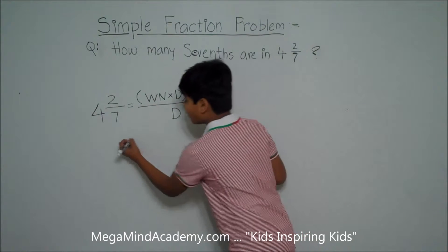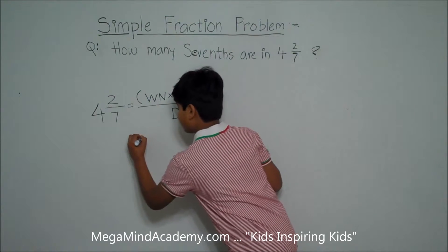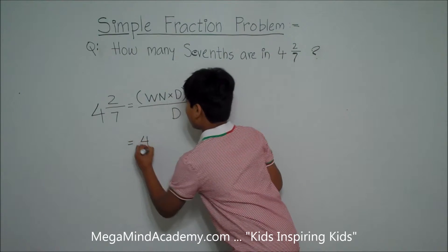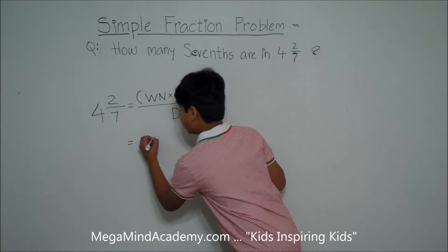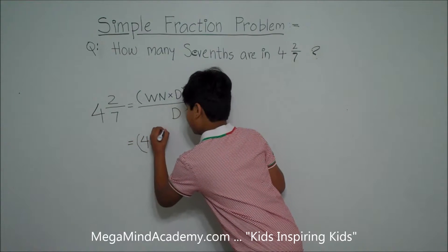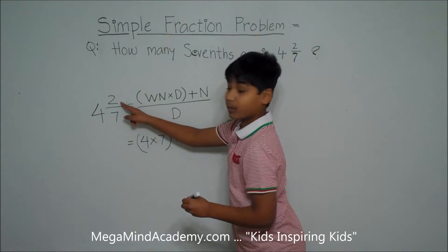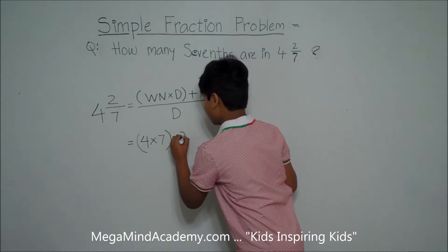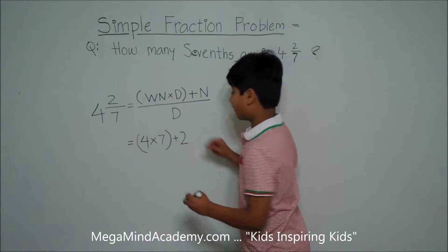So that means that the whole number is 4. We multiply it with the denominator, which is 7. Then we add it with the numerator, which is 2. Then we divide it by the denominator, which is 7.